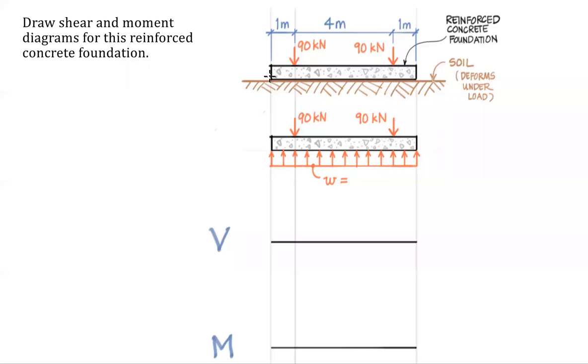And so by making this assumption, we can model the effect of the soil on the bottom of the foundation as a simple uniformly distributed load. Now, is this exactly what's going on in the soil? No, it's not. It is an approximate model, but it's close enough for most design purposes. So in the real world, this would be the most common way that this foundation element would actually be designed. All right, so we've kind of got the free body given to us. We just need to figure out the intensity of that line load.